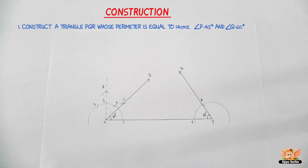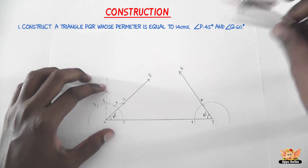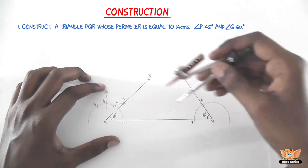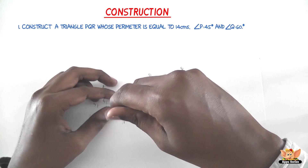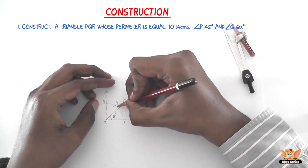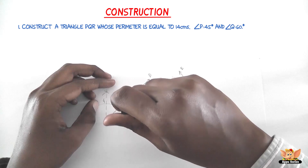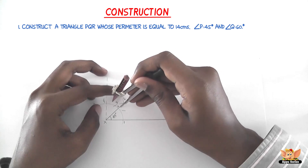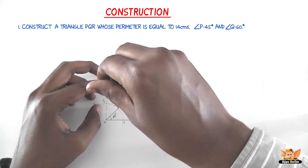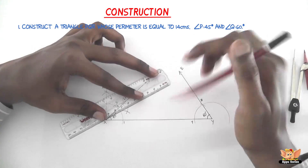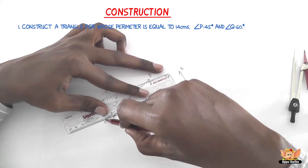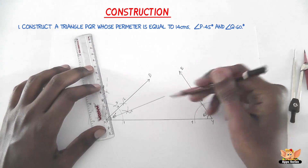The next step is to draw the bisectors of angles YXD and XYE — that is, 45 degrees and 60 degrees respectively — and mark their point of intersection as R. To bisect angle YXD: with 1 as center and radius more than half of arc 1–9, draw an arc. With 9 as center and the same radius, cut that arc. Name the intersection point 10. Join X10 as the bisector of 45 degrees.